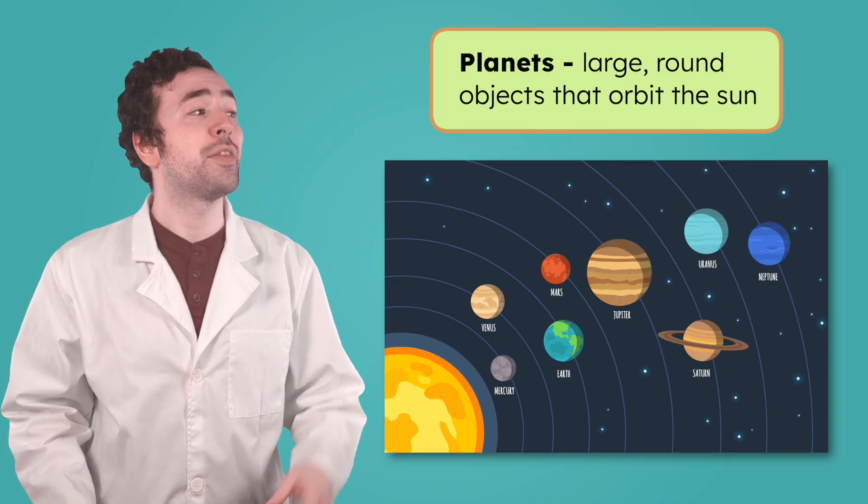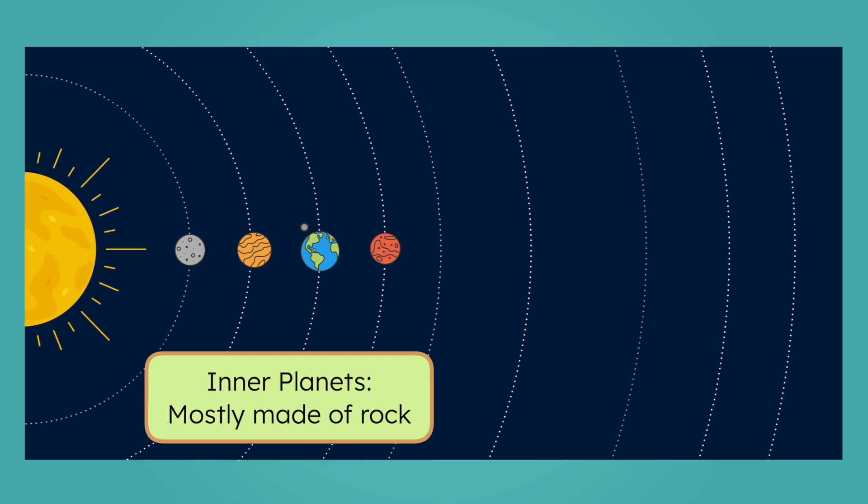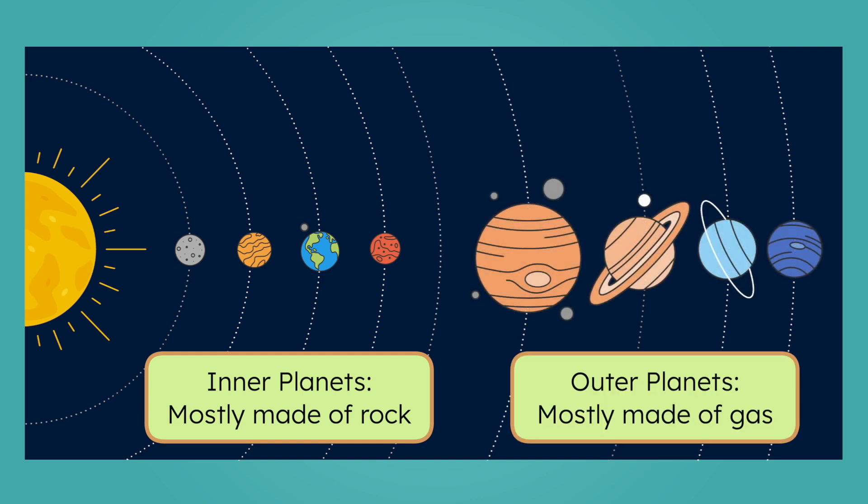In our solar system, there are eight of them. The four planets closest to the sun are called the inner planets. They are smaller and mostly made of rock. The four outer planets are much bigger and are mostly made of gas. Don't worry, we'll explore all the planets in more detail in future lessons.